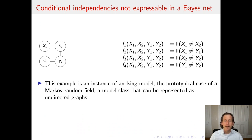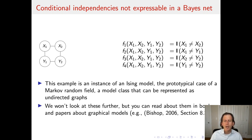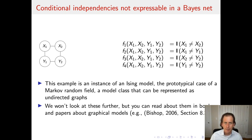This is an example of what's called an Ising model, and is a prototypical case of another class of graphical models called the Markov random field — a model class representable by undirected graphs. We're not going to look at these further, but if you're interested, you can read about them in books and papers about graphical models. For example, Bishop 2006 has a nice section on this.